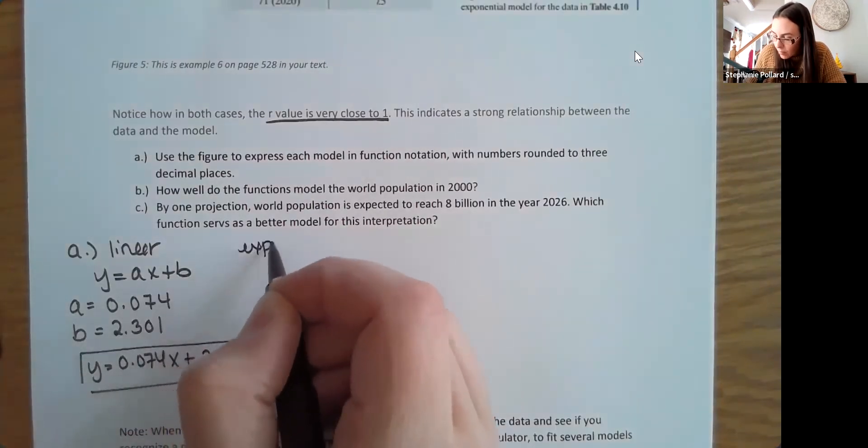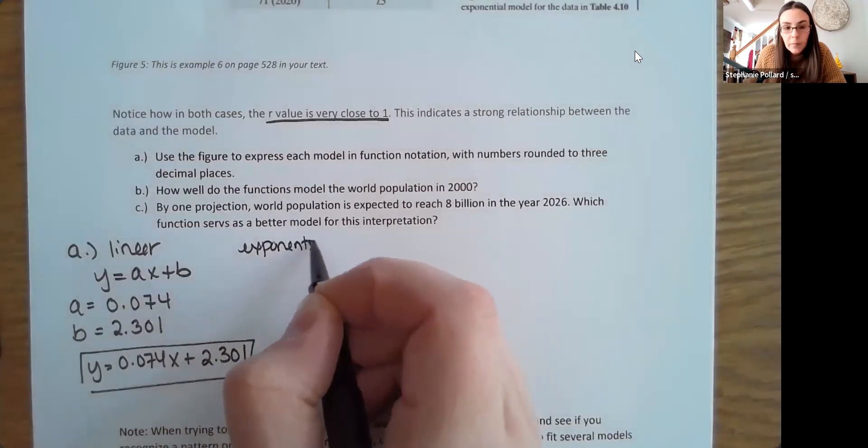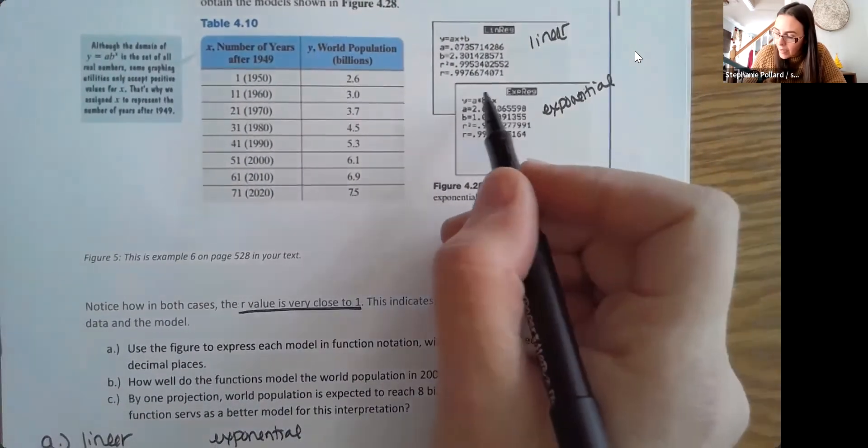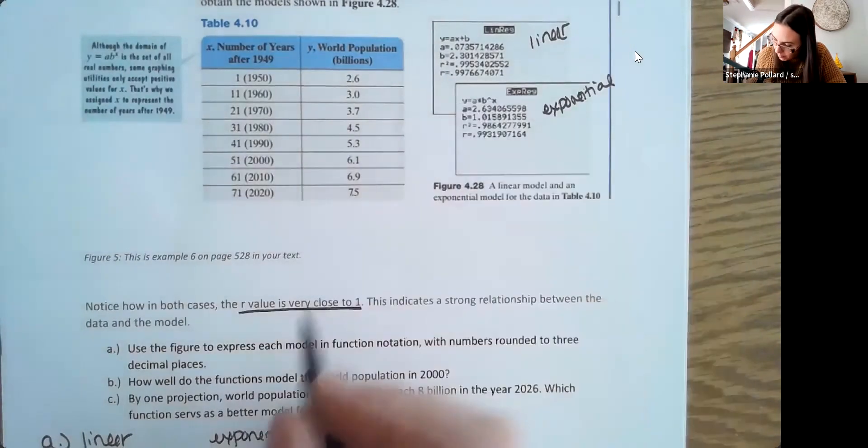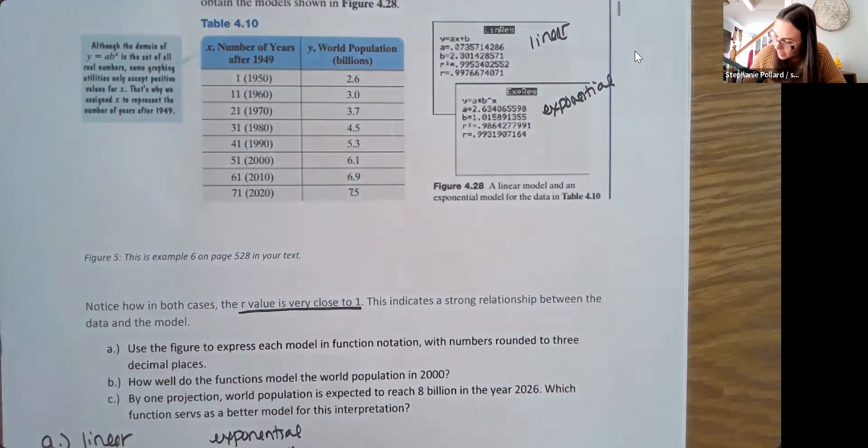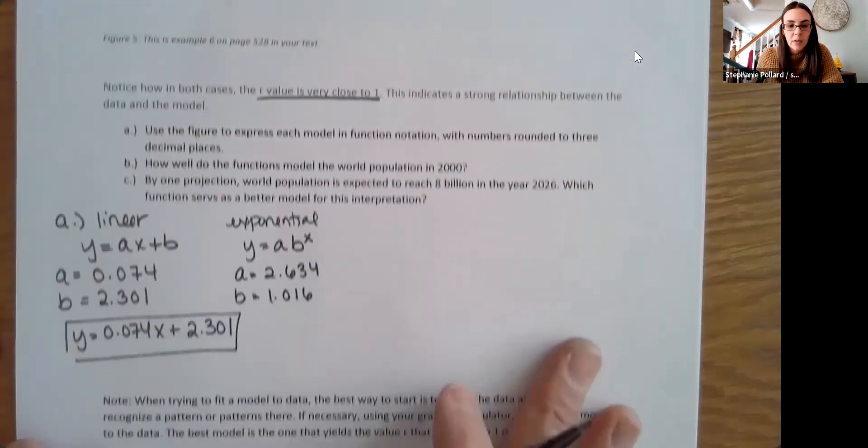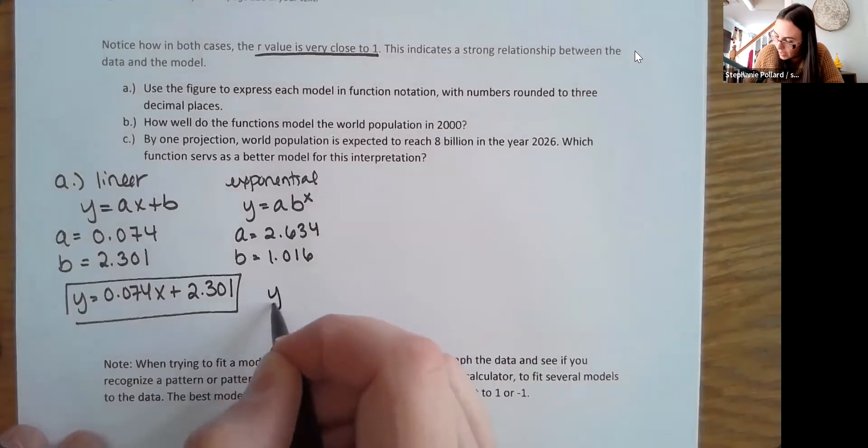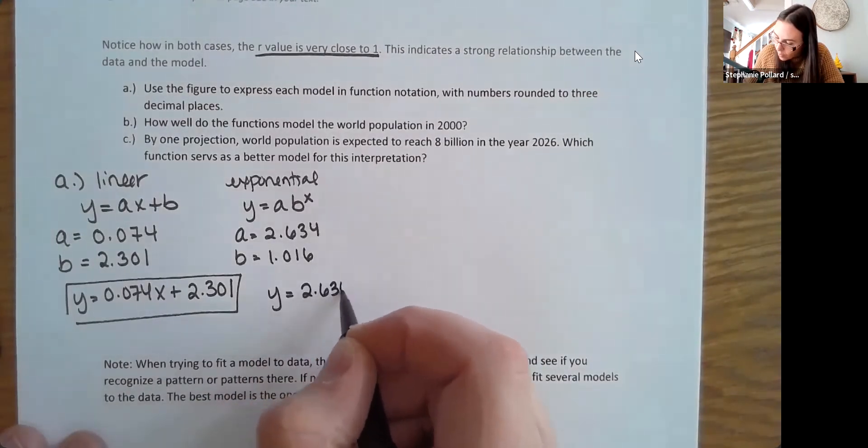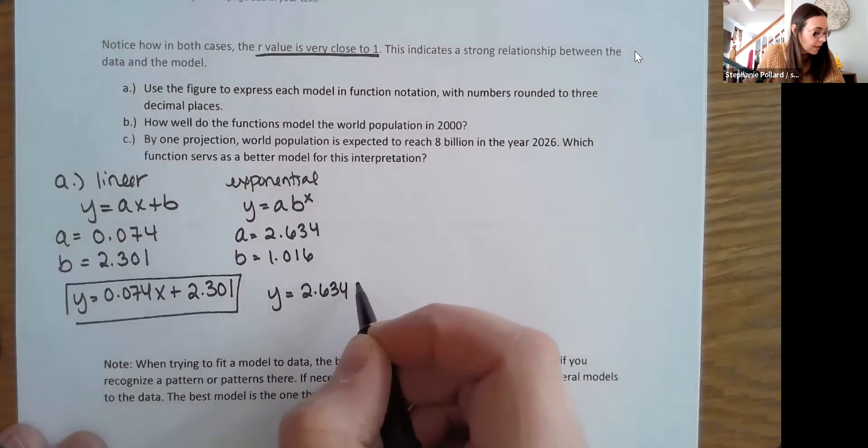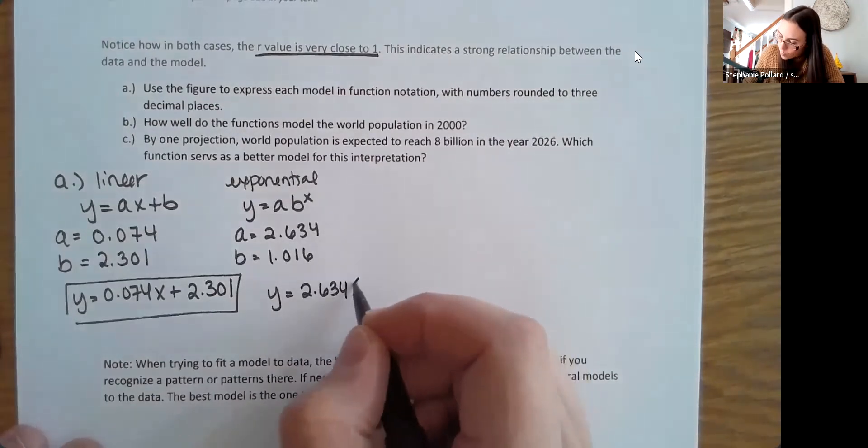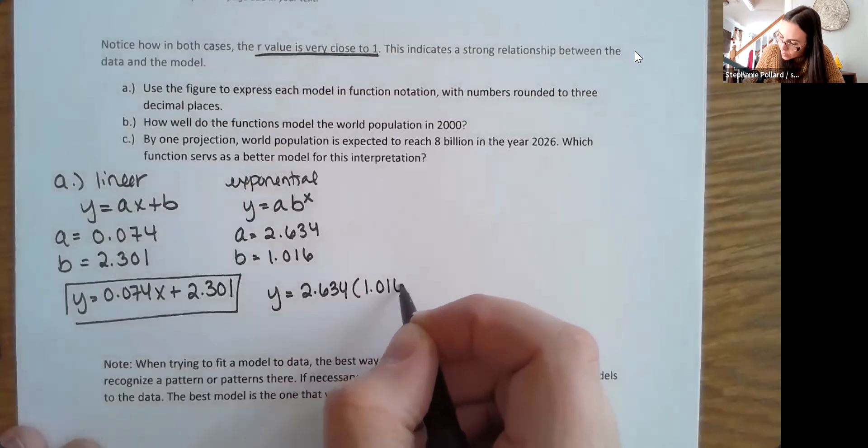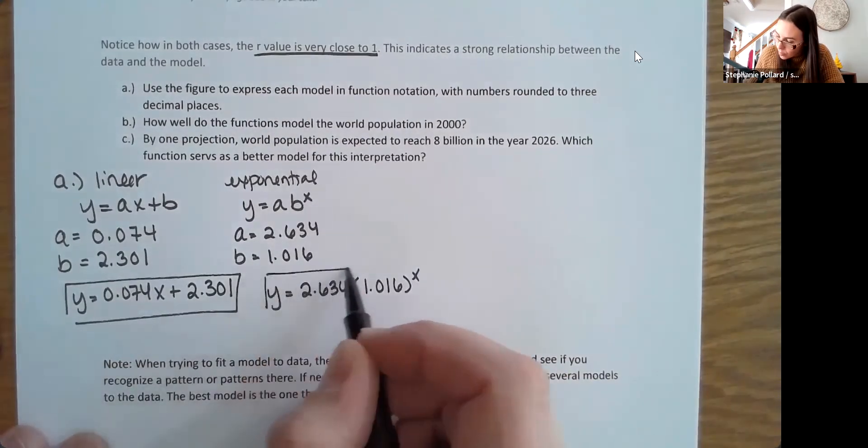For the exponential, I see that the format is like this. It's A times B to the X. And again, we're being told that A is 2.634 and B is 1.016. So if I plug in those values to my formula, I have 2.634, and then that's going to be multiplied with 1.016 to the X power. So that would be our exponential model.